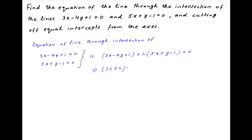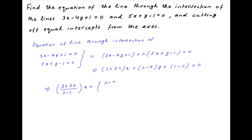Collecting the coefficients of x and y respectively, we get (3 plus 5 lambda)x plus (lambda minus 4)y plus 1 minus lambda equals 0. Dividing by lambda minus 1, we get (3 plus 5 lambda)/(lambda minus 1) times x plus (lambda minus 4)/(lambda minus 1) times y minus 1 equals 0.